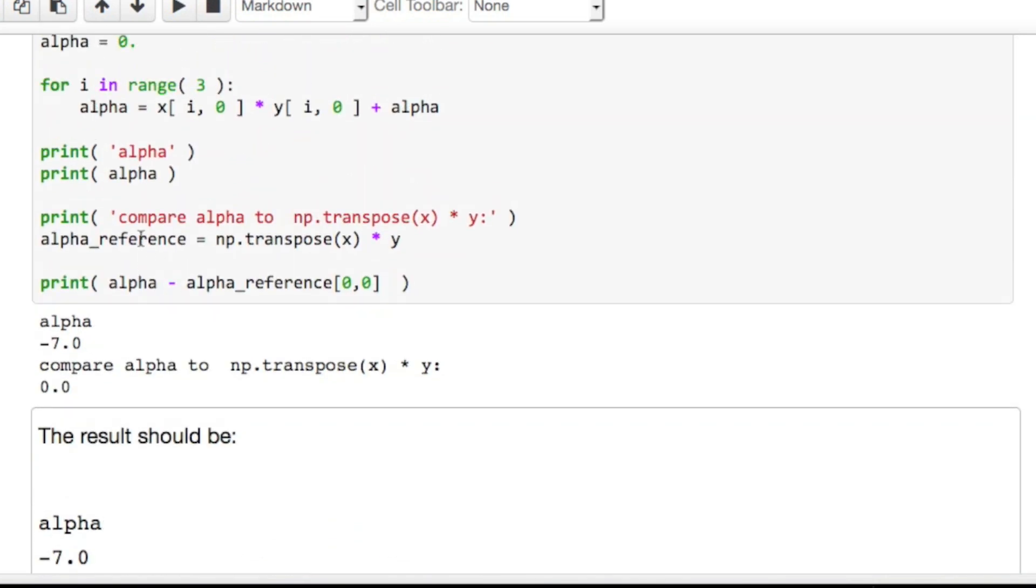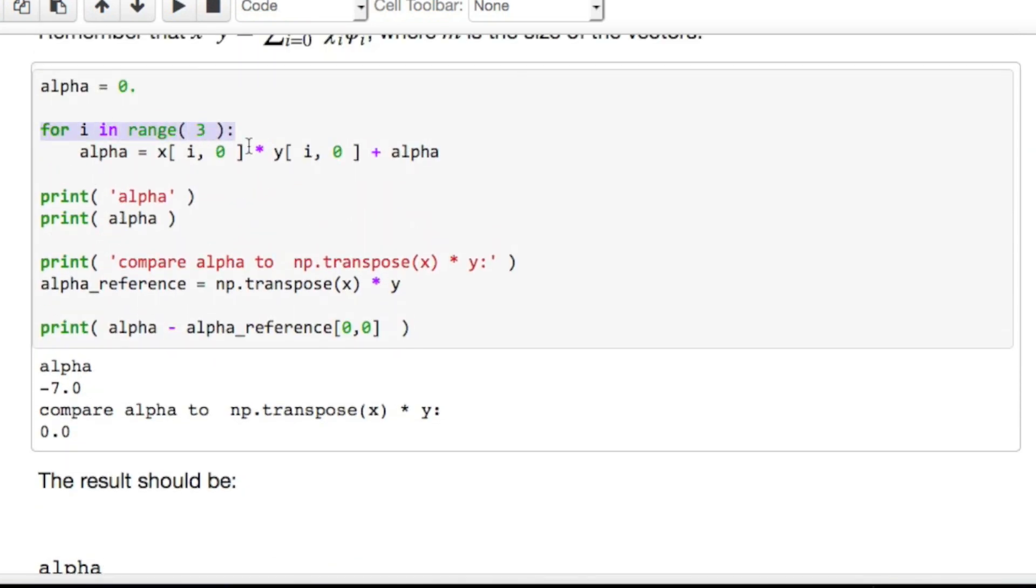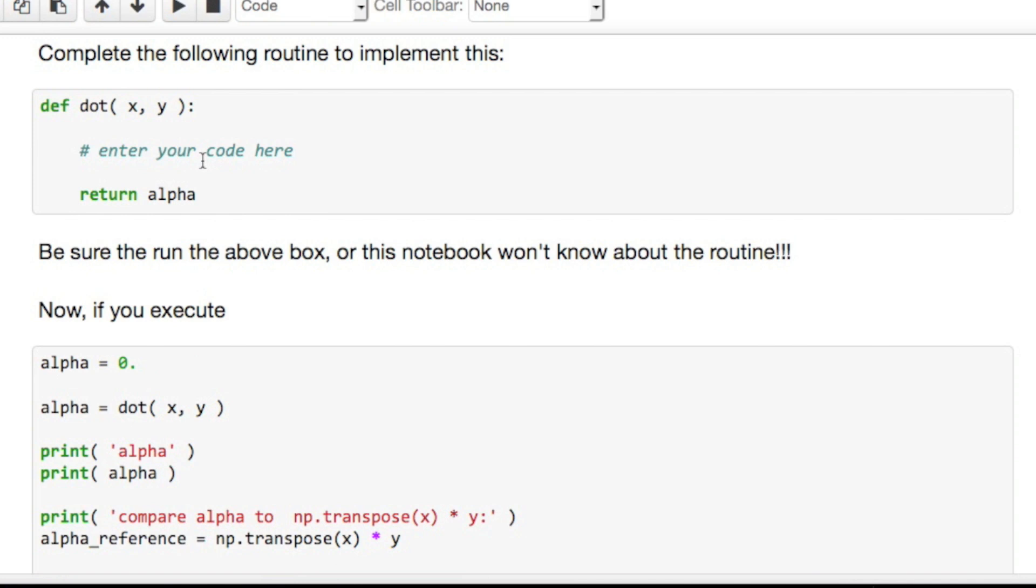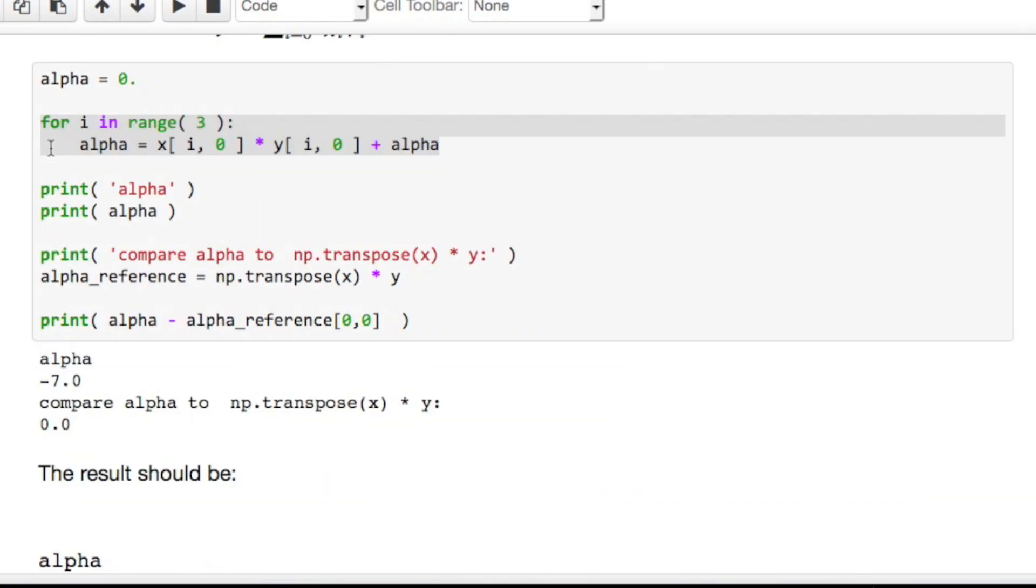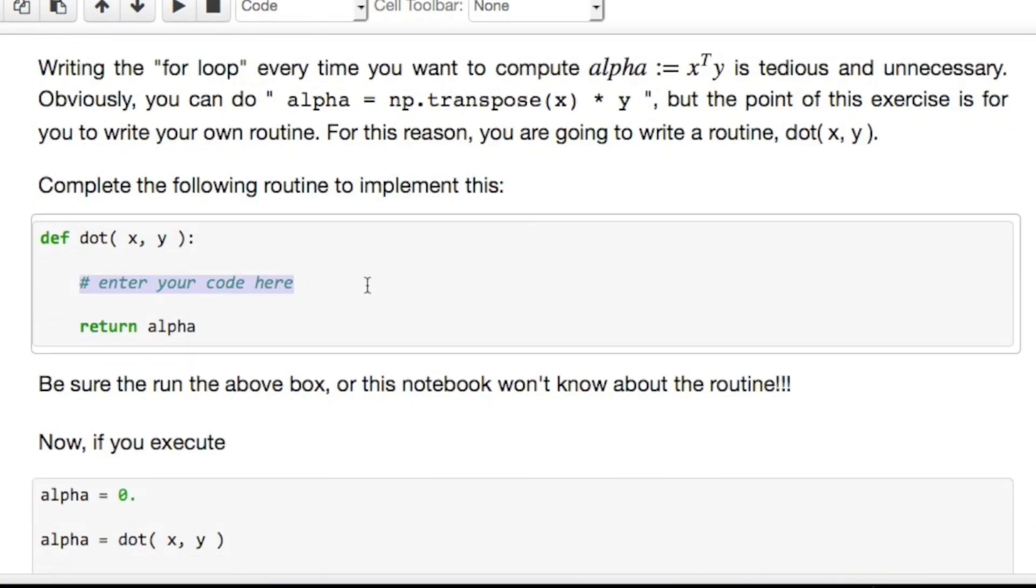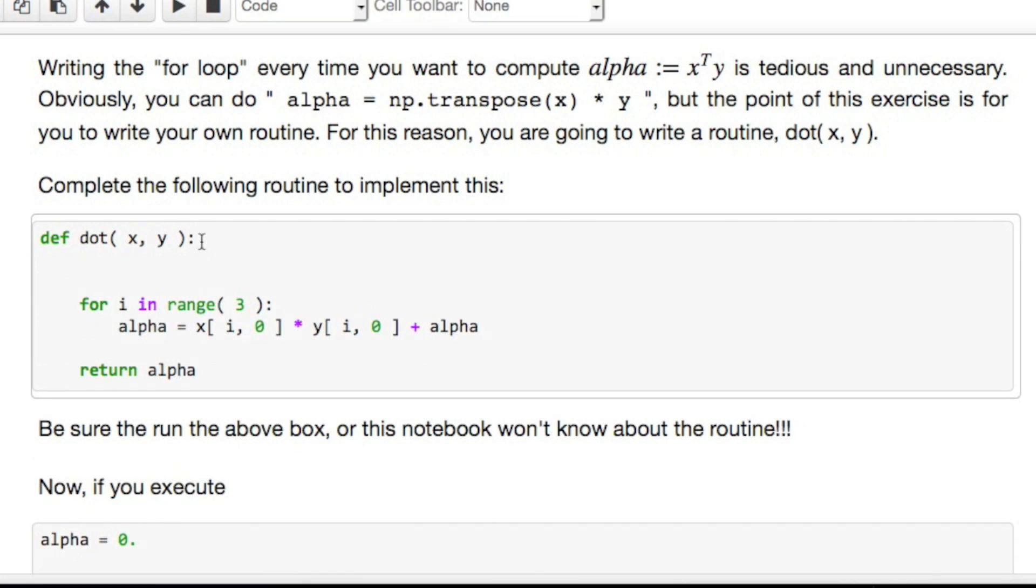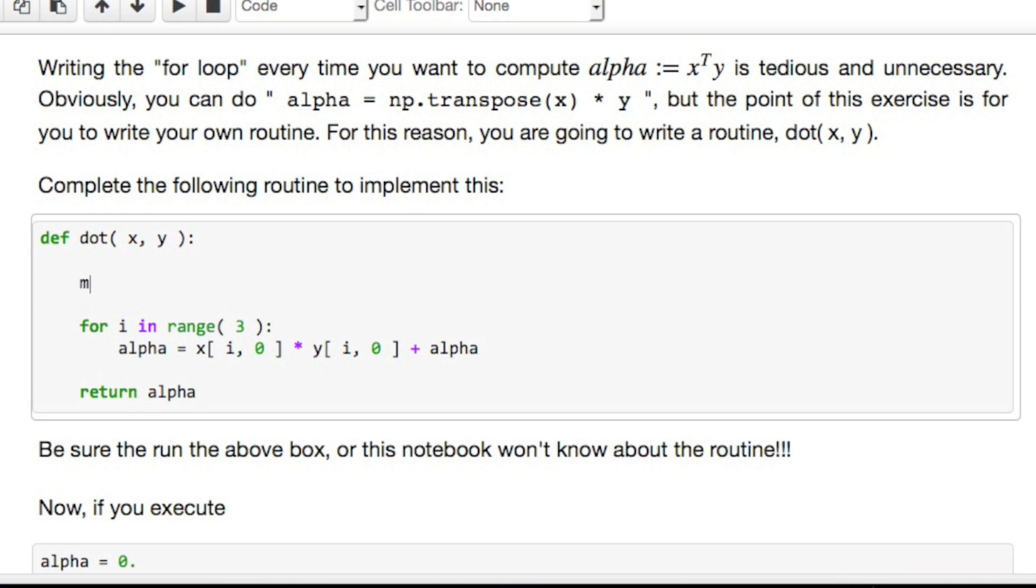Okay, so hopefully you're catching on to the fact that cutting and pasting does help. So, we'll now cut and paste this into the routine for the dot product that we need to write. Okay, but notice that we also have to extract the size of x and y. We'll assume that they are the same. And we'll set that equal to the shape of these matrices. We'll pick x.